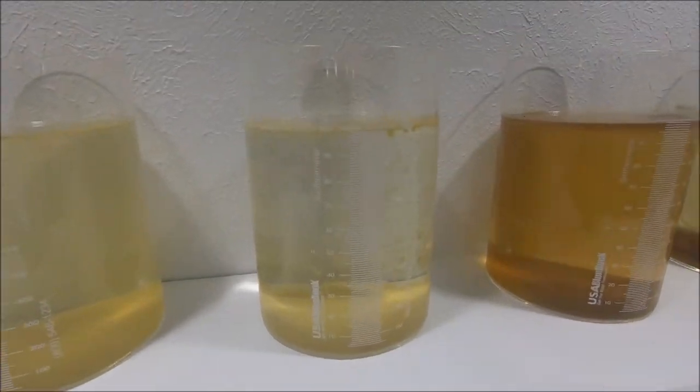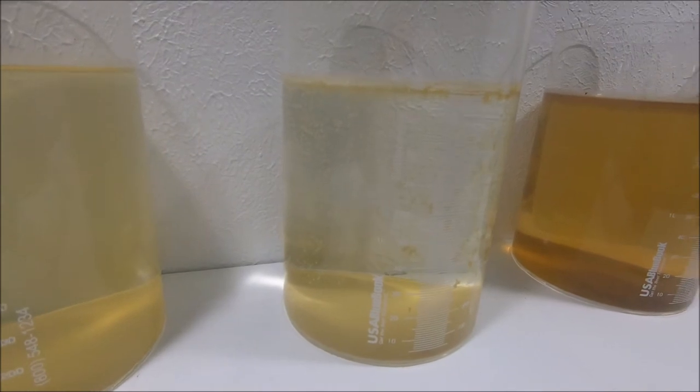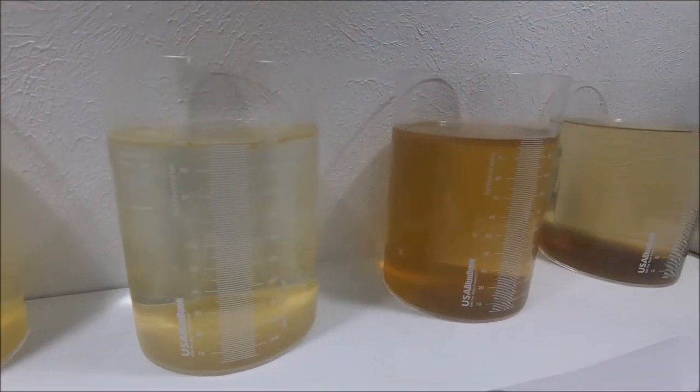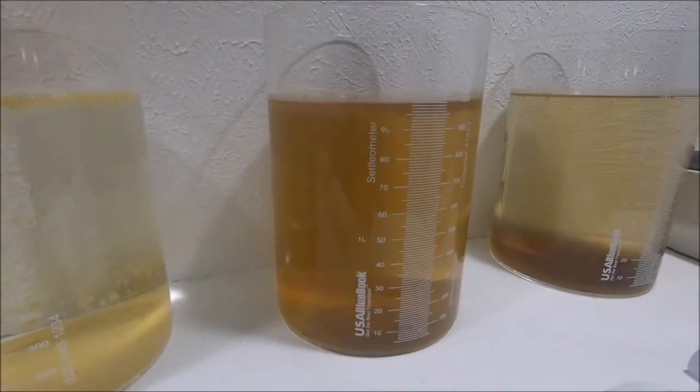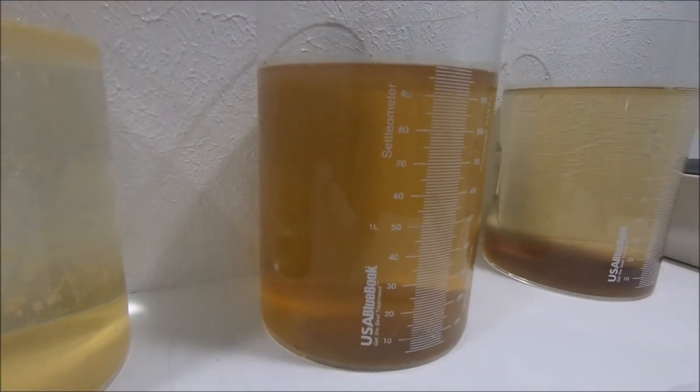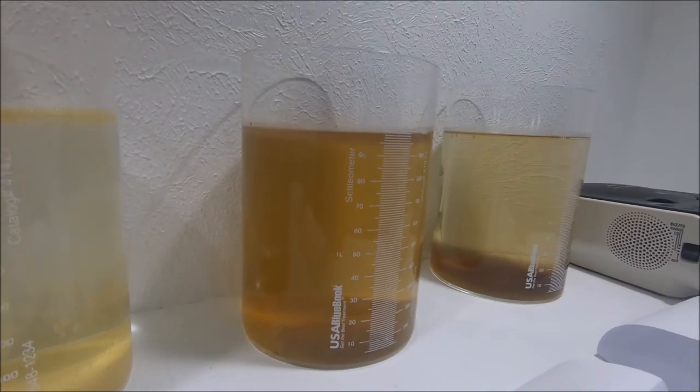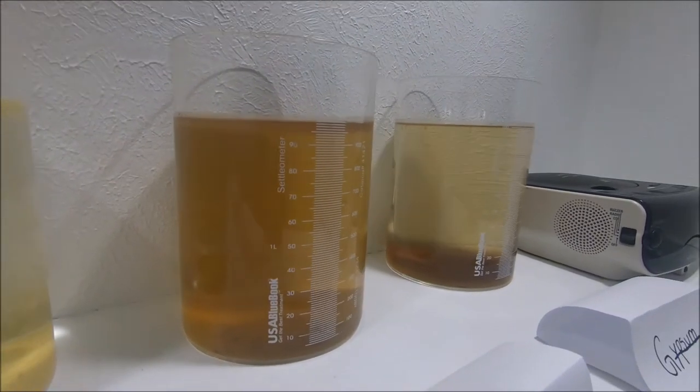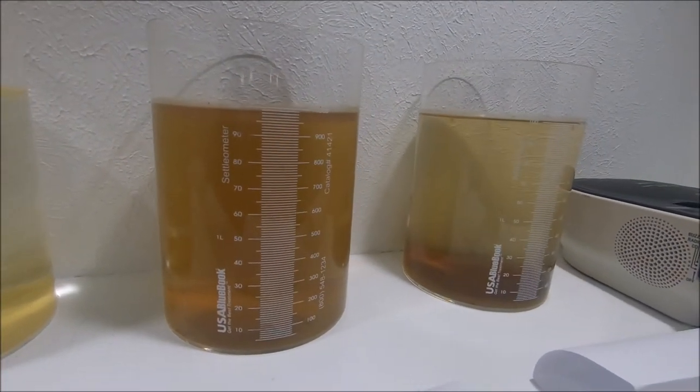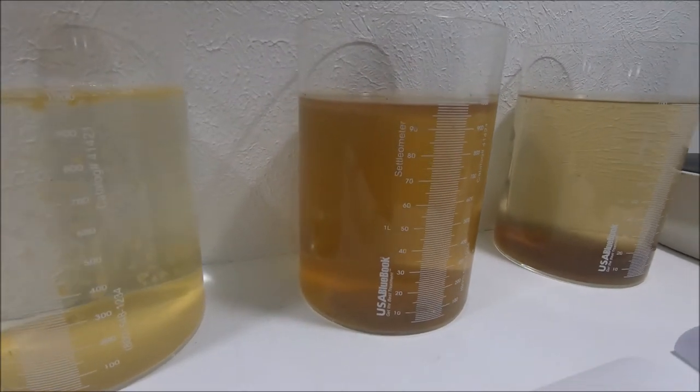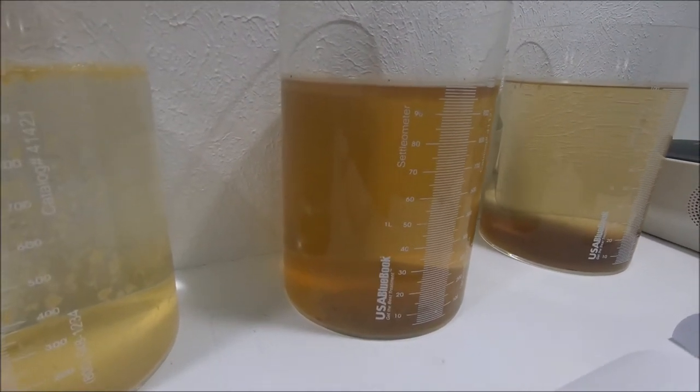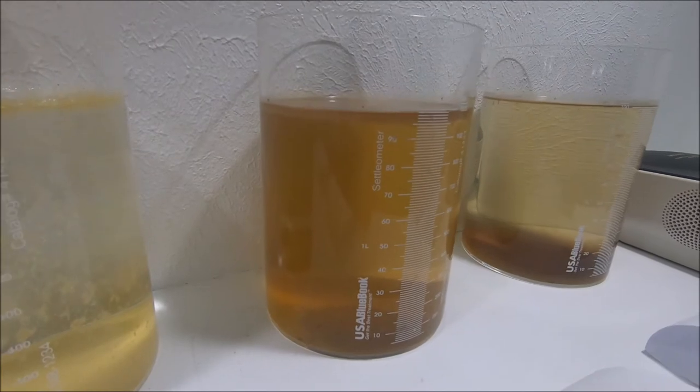The alum looks the same since we put it in 24 hours ago. With the lime, it's actually clearing up too but it's stained. I believe it's probably just because of the type of lime we used—whatever holds that lime together for that granular is what's causing the staining.